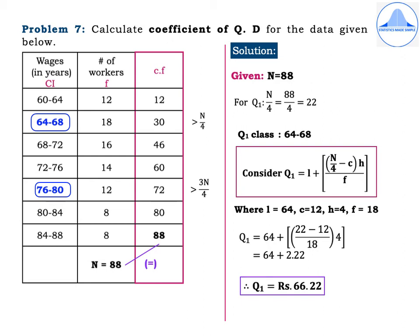To find Q1 and Q3, accumulate the frequencies to get CF values: 12, 30, 46, 60, 72, 80, 88. The last CF value matches N = 88, as highlighted in purple.